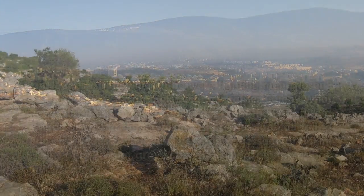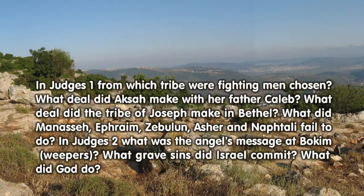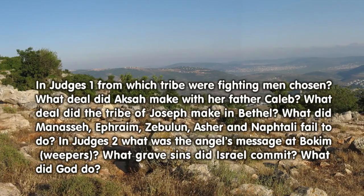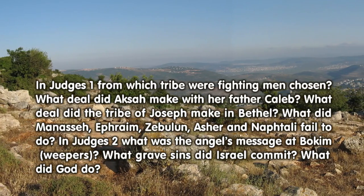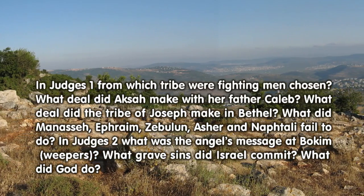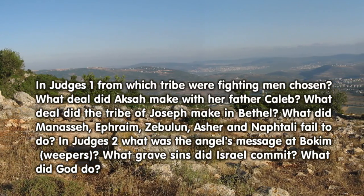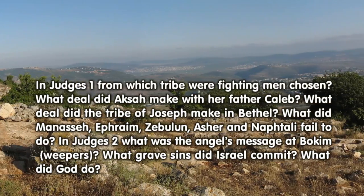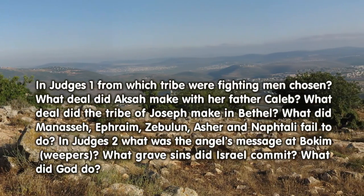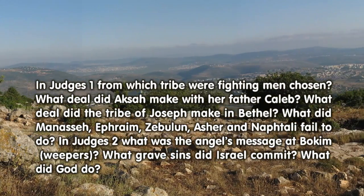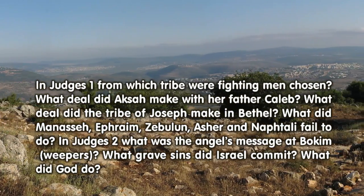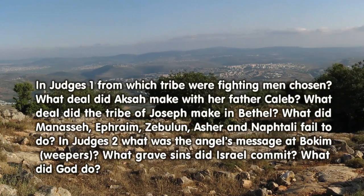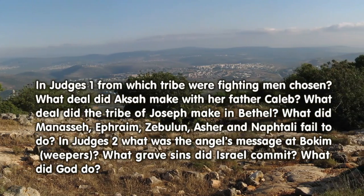In Judges 1: From which tribe were fighting men chosen? What deal did Aksa make with her father Caleb? What deal did the tribe of Joseph make in Bethel? What did Manasseh, Ephraim, Zebulun, Asher, and Naphtali fail to do?